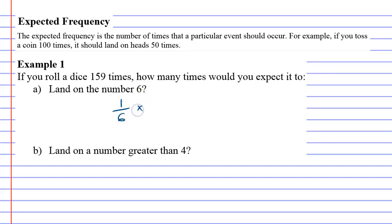Then multiply this probability by the number of times the dice was rolled. So we multiply 1 over 6 times 159 and we get 26.5. We can leave it as a decimal. So you'd expect it to land on 6 about 26.5 times.